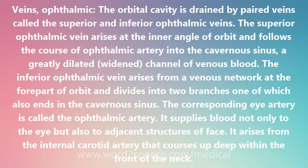The orbital cavity is drained by paired veins called the superior and inferior ophthalmic veins. The superior ophthalmic vein arises at the inner angle of the orbit and follows the course of the ophthalmic artery into the cavernous sinus, a greatly dilated channel of venous blood.